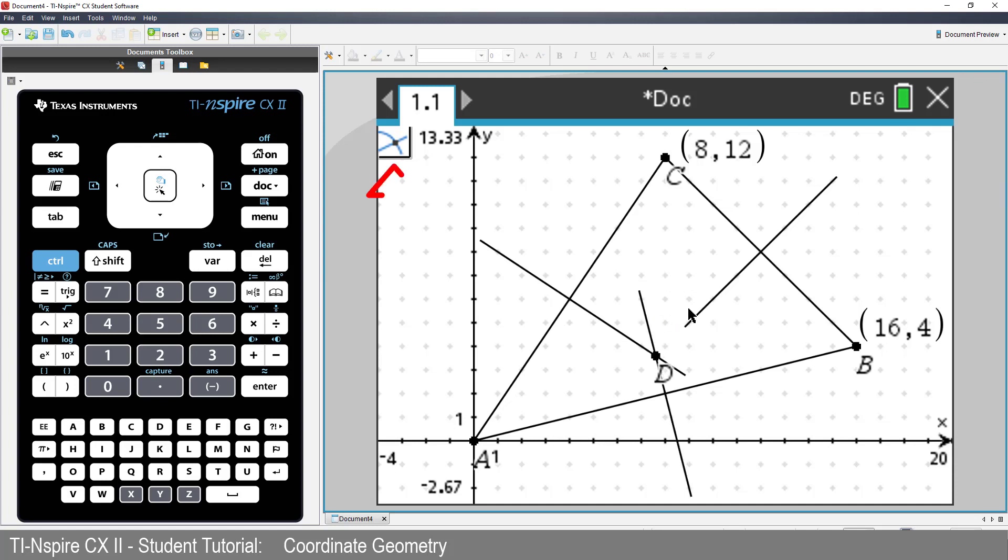The intersection tool is still active. Select another pair of bisectors. Point E is created. It looks like D and E are the same points.